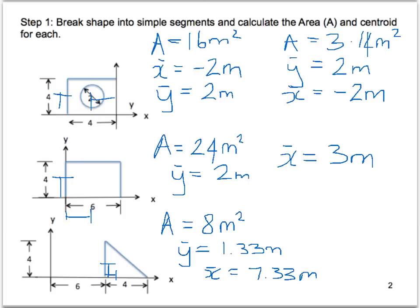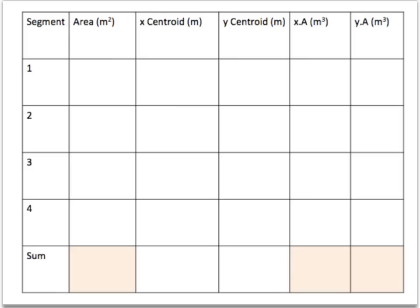So now we've collected all this data, we'll move on to the next slide and put it all in a table. Using a table such as this is great when you have more than one shape to deal with when breaking it up. Segment 1 will be our square on the left, so the area was 16. Our X centroid was negative 2, our Y centroid was 2.